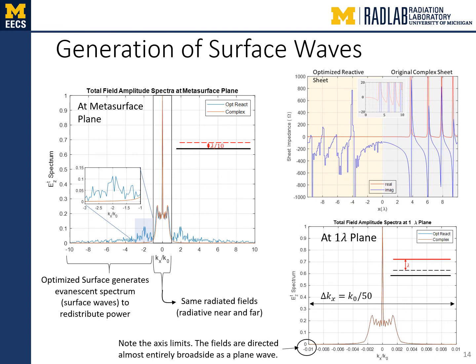The impedance profile is shown in the upper right. We plot the total field amplitude spectrum observed just on the metasurface plane. The complex sheet spectrum is shown in red, and the optimized reactive sheet in blue. The complex sheet has little to no evanescent spectrum, while the optimized reactive sheet shows significant evanescent spectrum associated with surface waves redistributing power to obtain passivity. The spectra within the visible region from negative k0 to k0 are nearly identical, indicating the two metasurfaces radiate the same fields. The lower right figure shows the total field spectra observed along the one-lambda plane, where the spectra are equal, confirming the cost function formulation. Most energy is directed broadside at approximately kx equal to zero, indicative of a perfect plane wave.